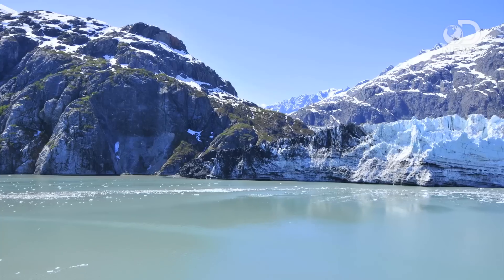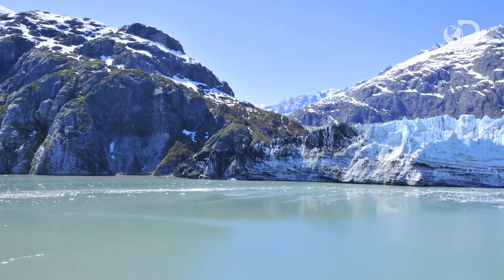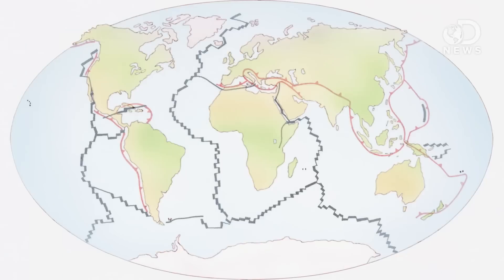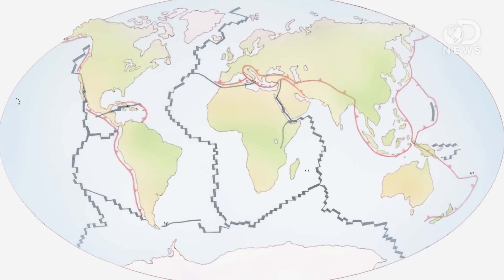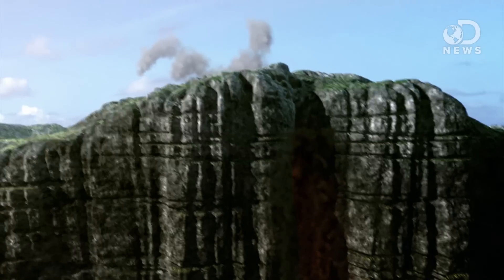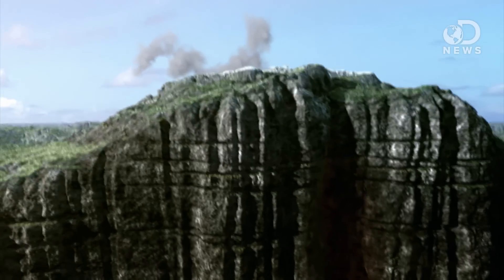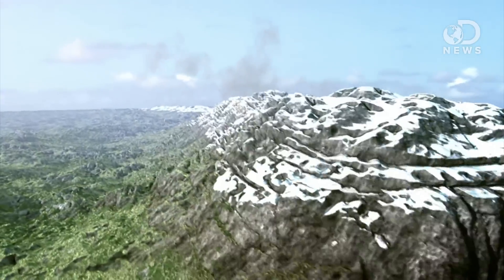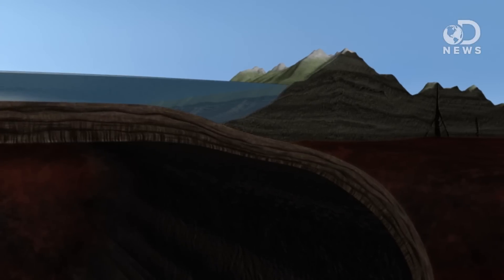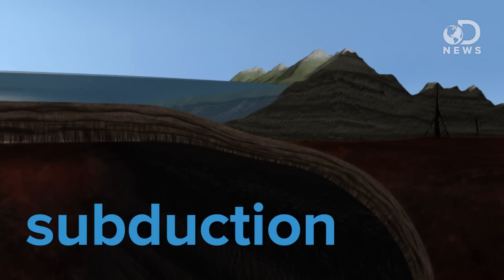The theory of plate tectonics says that the Earth's uppermost layer, called the lithosphere, is divided into seven plates, all of which move relative to one another. When they collide, they change the global landscape, forming mountain ridges, rearranging continents, and sometimes even pushing each other deeper into the planet — a process called subduction.